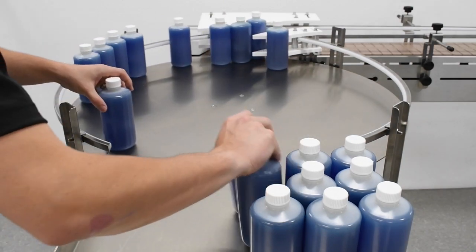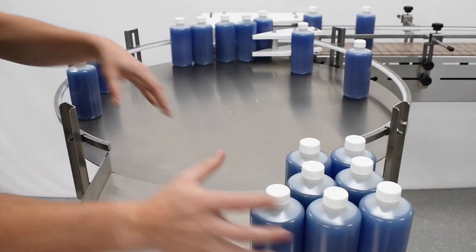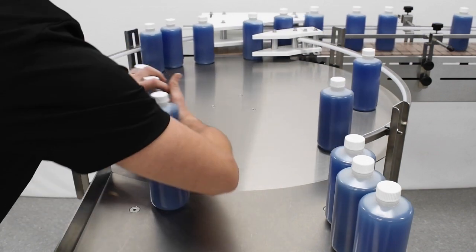With the guide rail properly modified, your bottles are able to freely move between the accumulation and infeed tables.